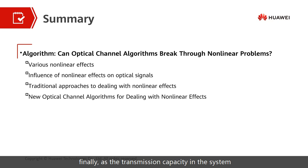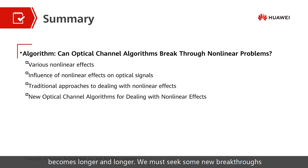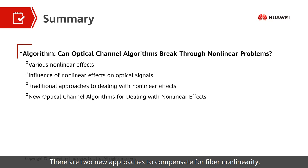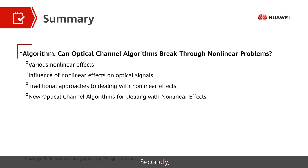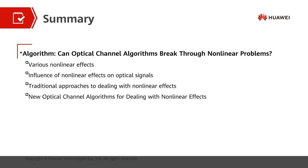As the transmission capacity becomes larger and the transmission distance becomes longer and longer, we must seek new breakthroughs in modulation technology and algorithms. There are two new approaches to compensate for fiber non-linearity: use a digital reverse transmission algorithm at the receiving end to compensate the non-linear effect, or encode the transmit-end signals to generate signals with better non-linear performance.